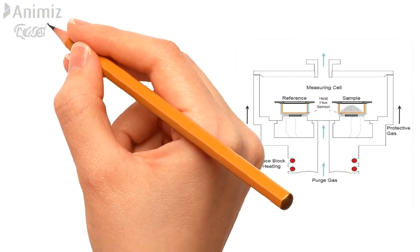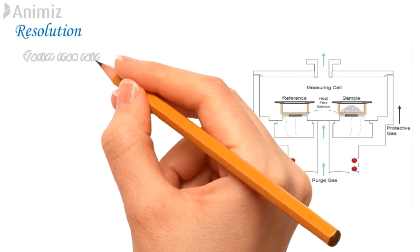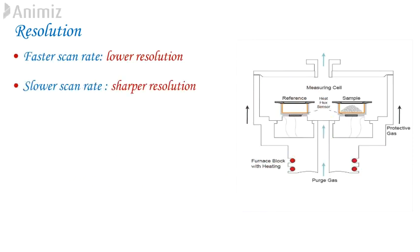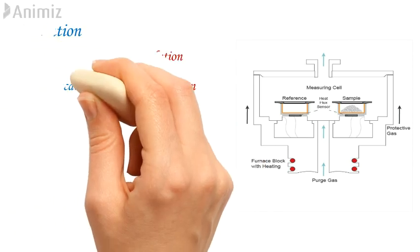3. Resolution. Because of thermal gradients across a sample, the faster the scan rate, the lower the resolution, and the slower the scan rate, the sharper the resolution. Thermal gradients can be reduced by reducing sample size and improving thermal contact with the pan by good encapsulation.